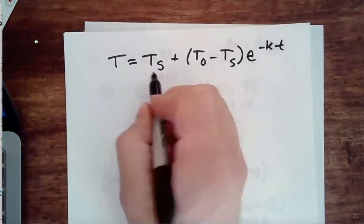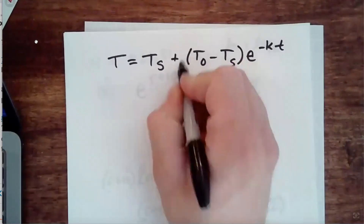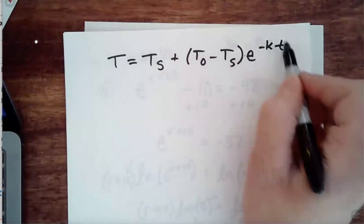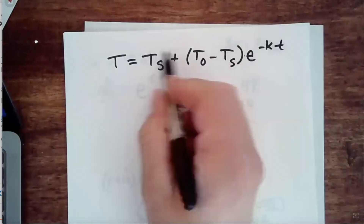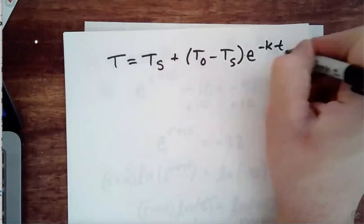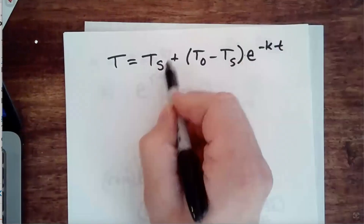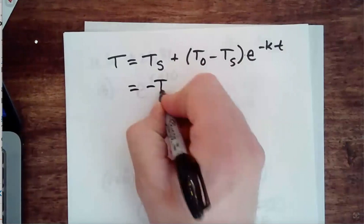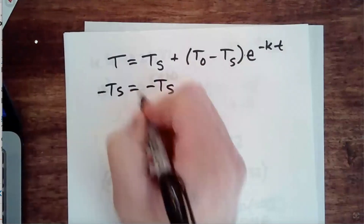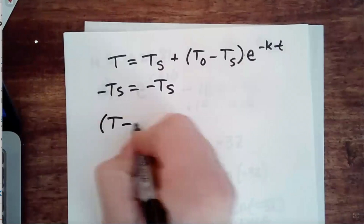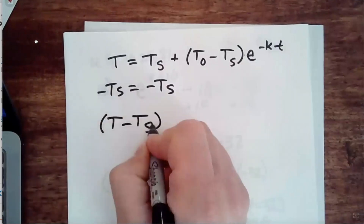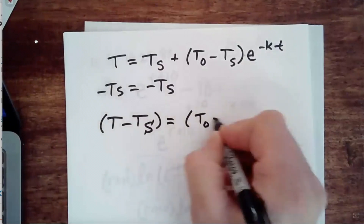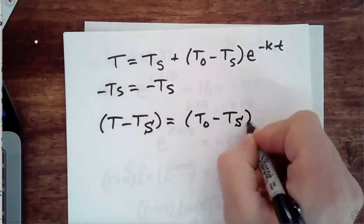First off, I have an addition next to a multiplication of the exponent. Get rid of addition — the goal is to get T by itself, so get rid of things that are added, because you always get rid of addition first. I'm going to write it with parentheses just to get in the habit for the next step. Equals — now, since we subtracted it — T sub zero minus T sub S times E to the negative KT.